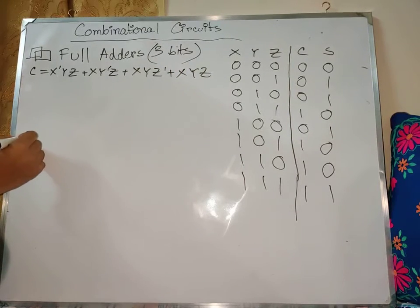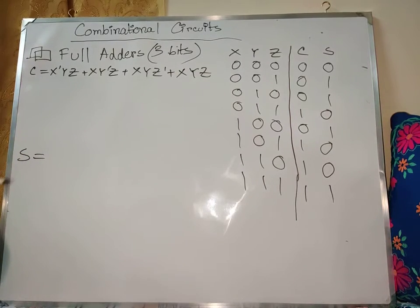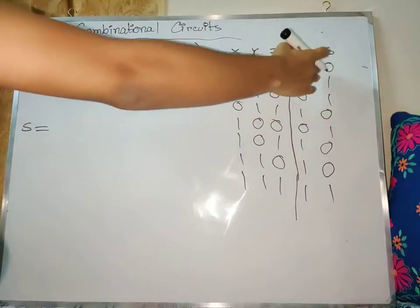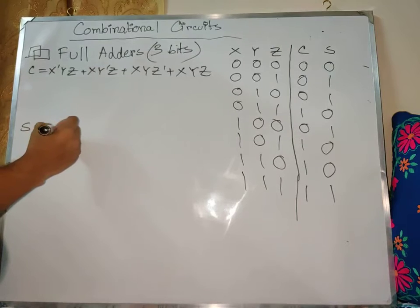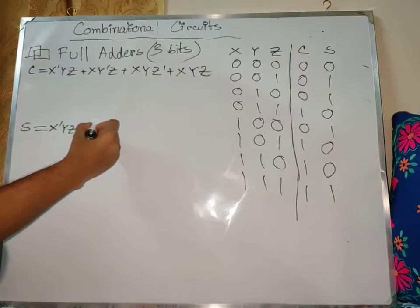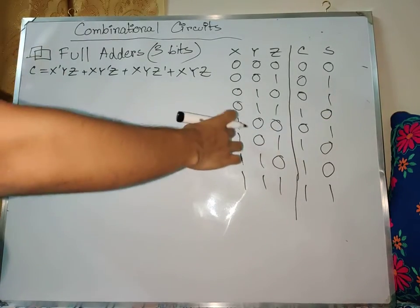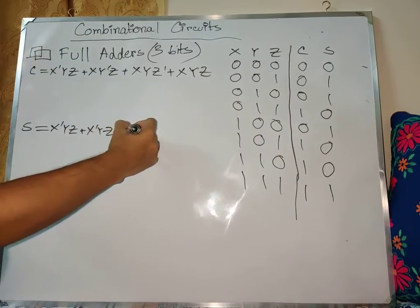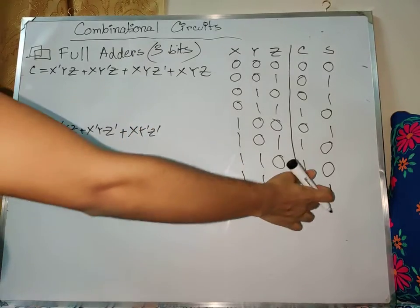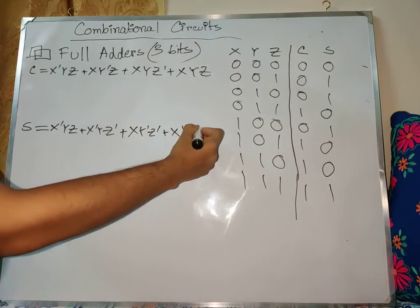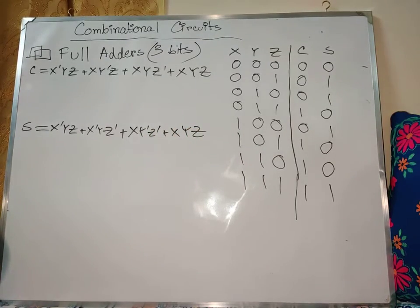Similarly, the SR function — I am going to derive the SR function. The SR function: the corresponding inputs will be checked. So the function is 1 for inputs including x'y'z and xyz. The SR function will then be simplified.